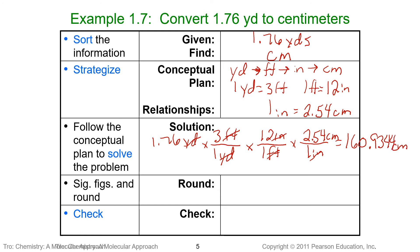Now we have to round to make sure that we have the proper number of significant figures. The 2.54 is an exact conversion with unlimited significant figures. The 12 inches in one foot is an exact conversion. Three feet in a yard is an exact conversion. So our significant figures are determined by our initial number. So we would round this to 161 centimeters.